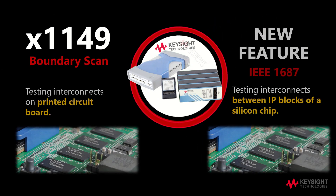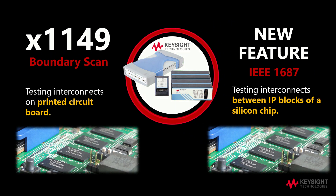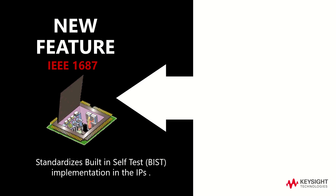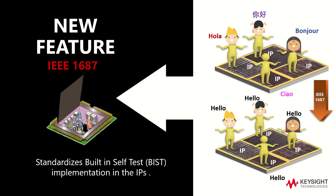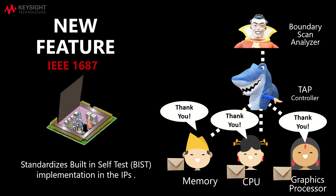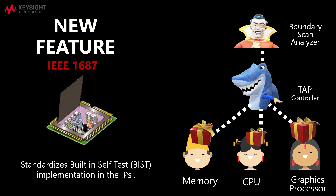As such, to mitigate this problem, we have a new standard known as the IEEE 1687. This standard has been built on the existing boundary scan standard. Boundary scan enables testing interconnects on printed circuit board. On the other hand, IEEE 1687 enables testing interconnects between IP blocks of a silicon chip. By standardising the built-in self-test implementation in the IPs, the IEEE 1687 will act as a medium to allow easier test generation and standardised execution and diagnostics. With the common language set between the IPs and TAP controller, this will ensure effective communication between the boundary scan analyser, the TAP controller and the various IPs on the chip.